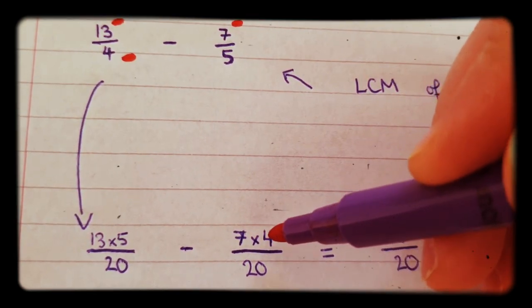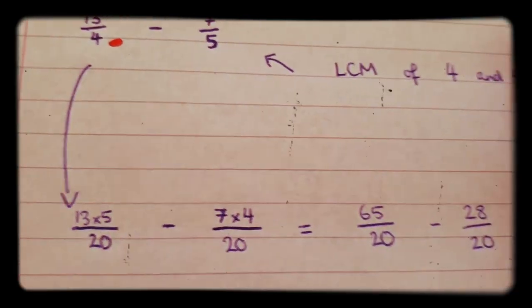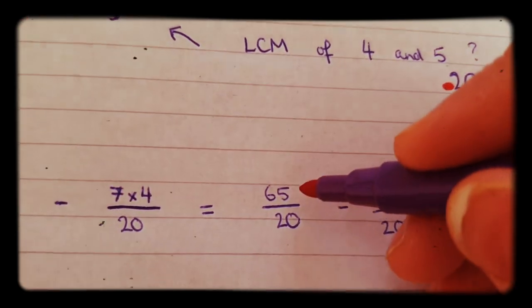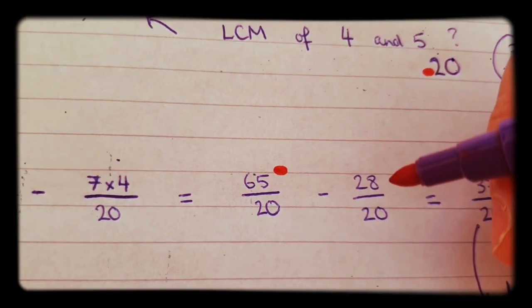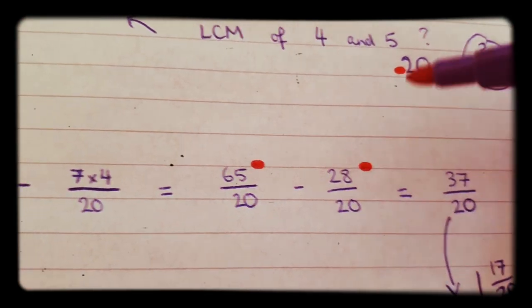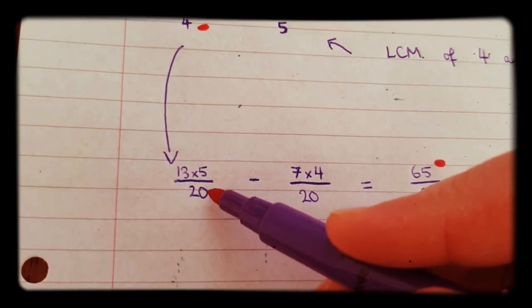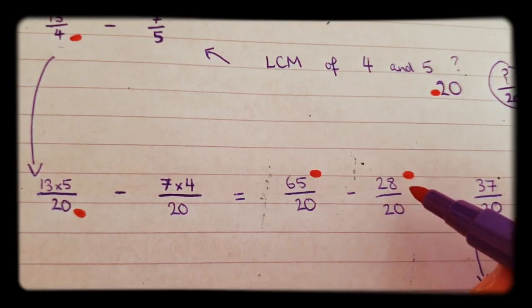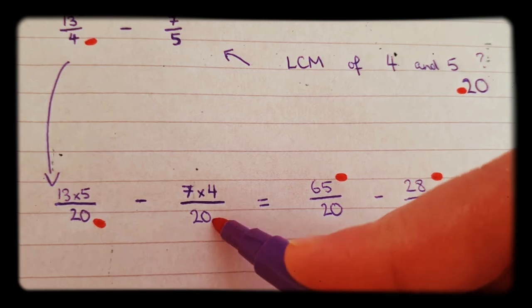Five goes into 20 four times. So seven, you have to times by four as well. And if you do that, you will get 65 over 20 minus 28 over 20. So 65 over 20 was from here, and 28 over 20 was from there.